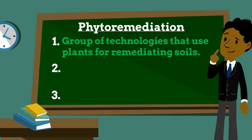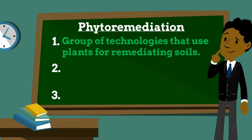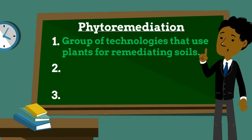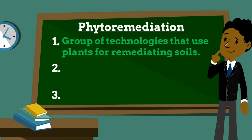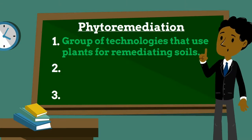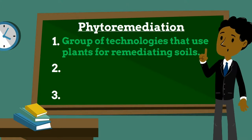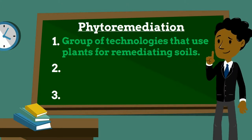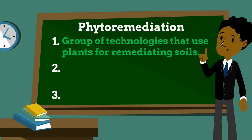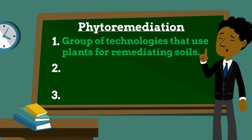Phytoremediation is a generic term for the group of technologies that uses plants for remediating soils, sludges, sediments, and water contaminated with organic and inorganic contaminants. Phytoremediation can be defined as the efficient use of plants to remove, detoxify, or immobilize environmental contaminants in a growth matrix through the natural biological, chemical, or physical activities and processes of plants.